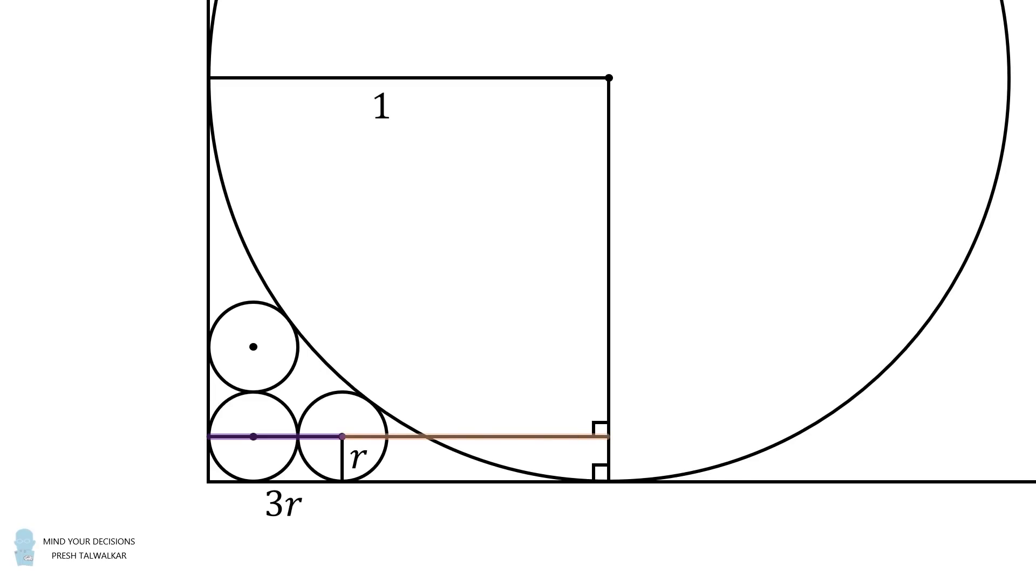Therefore, we can compute the following length. The purple and peach line segments together have a length equal to 1. Therefore, the peach line segment has a length equal to 1 minus 3r. Next, the following length will be equal to r, which means this length will be equal to 1 minus r.